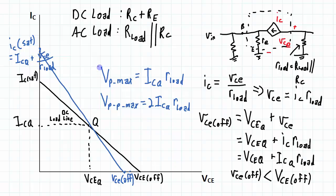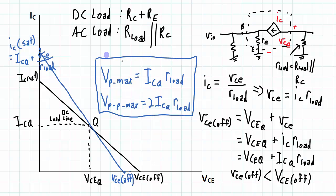And this right here is the important takeaway for the AC load line, because we want to know what is the maximum output I can have before clipping occurs — because when clipping occurs, that means the output signal, the output voltage, is no longer representative of the input voltage.